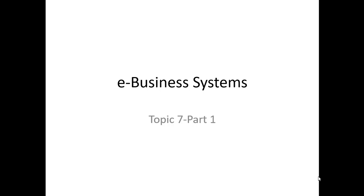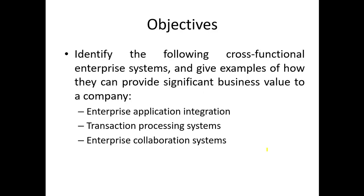Welcome to topic 7 entitled eBusiness Systems. This presentation is the first part of this topic. The first objective is to identify the following cross-functional enterprise systems and give examples of how they can provide significant business value to a company: enterprise application integration, transaction processing systems, and enterprise collaboration systems.